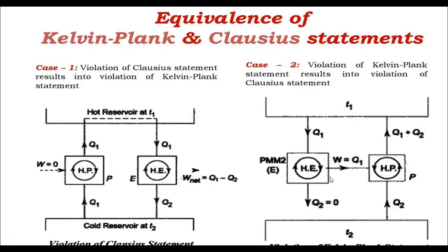Similarly, we prove that violation of the Kelvin-Planck statement also results in the violation of the Clausius statement. For that, we assume an engine which violates the Kelvin-Planck statement — that is, a perpetual motion machine of the second kind, which exchanges heat with a single reservoir and does not reject any heat. This engine takes heat Q1 and converts the entire amount to work, which is not possible according to the Kelvin-Planck statement, but we assume on the contrary. Now we also assume a heat pump which obeys the Clausius statement — pumping heat from a lower temperature to a higher temperature with some work input — and that work input is the same as the work produced by the perpetual motion machine.